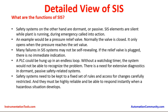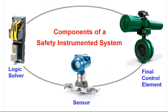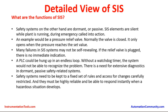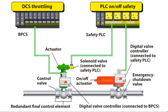What are the functions of the safety instrumented system? Some safety systems are dormant or passive. SIS elements are silent while the plant is running normally; during an emergency, they are called into action. Under normal plant operation, the BPCS is taking control and operating the plant within the required process limits. Whenever the process limits are exceeded and the BPCS control is unable to contain the pressure, temperature, or volume going beyond the limit, the next level of protection — the safety instrumented system — comes into action.